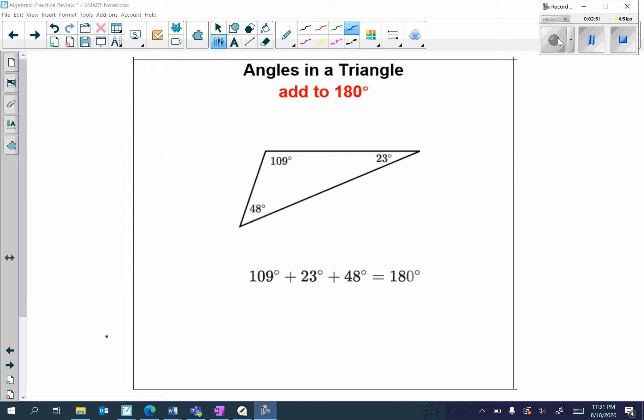Next, we have angles in a triangle add to 180 degrees. So, here I have a triangle and the degrees inside are 109 degrees, 23 degrees, and 48. When I add up all those numbers, they equal 180 degrees.